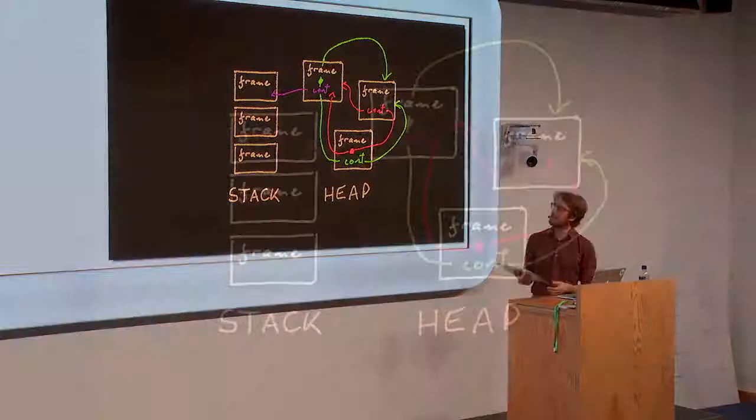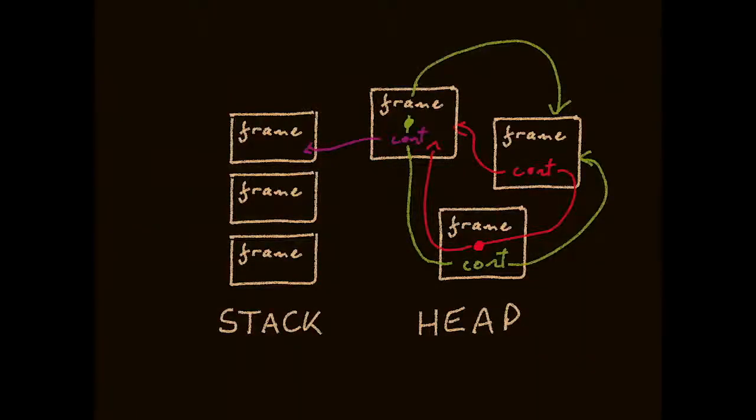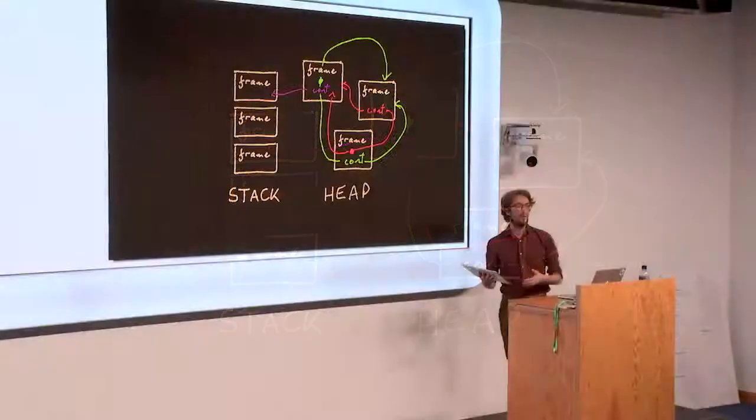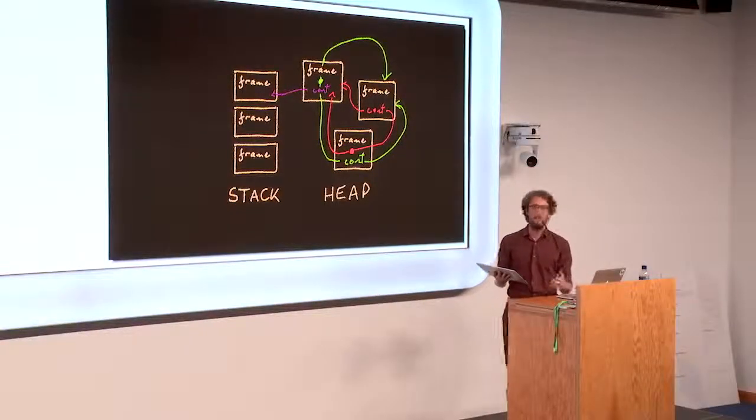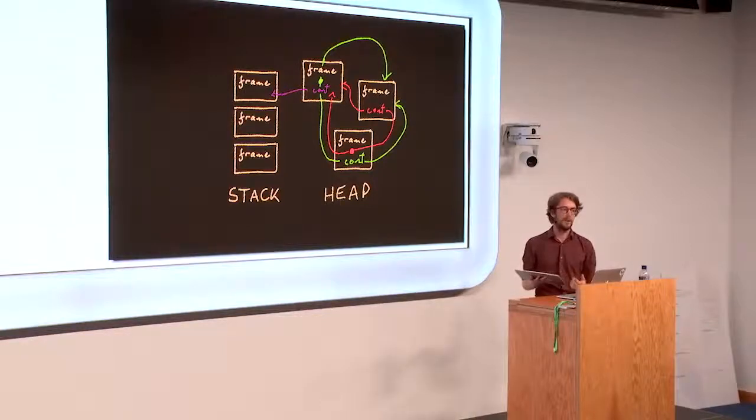So we have some code executing normally on the stack. At some point, we mark a delimitation. We can then do fancy stuff, saving continuations, running them. But when they're finished running, we're just going to return to executing normally on the stack.